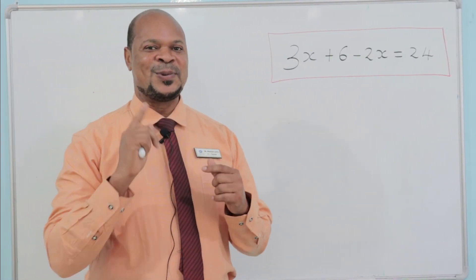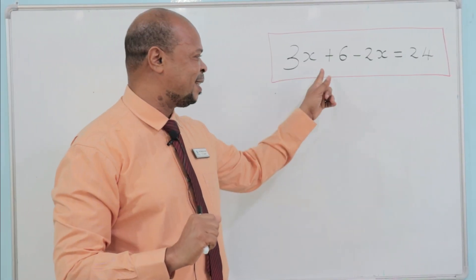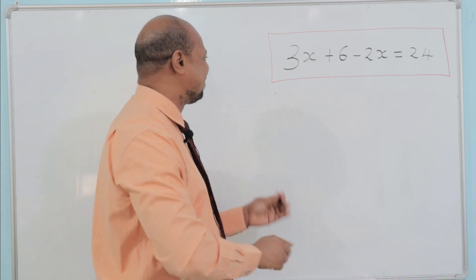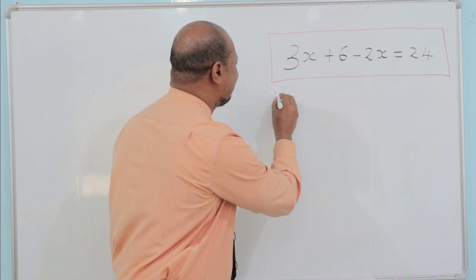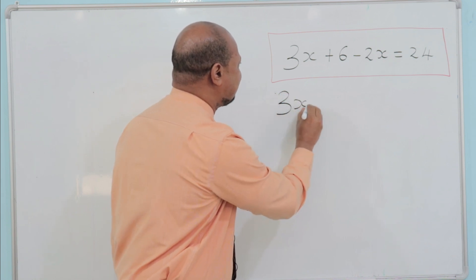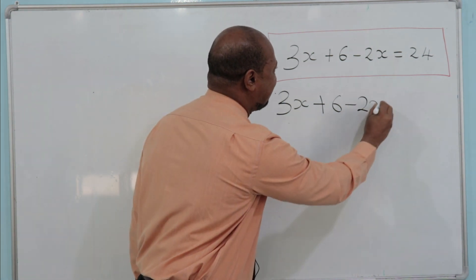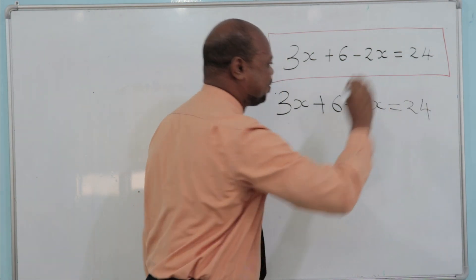Now, we are going to solve this simple equation here. Let us see. We have 3x plus 6 minus 2x equals 24.